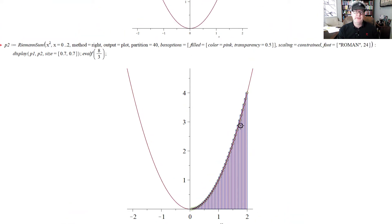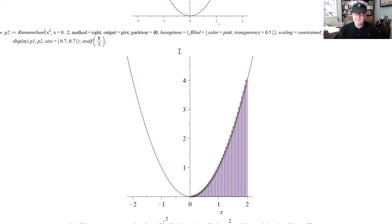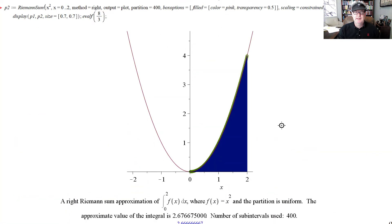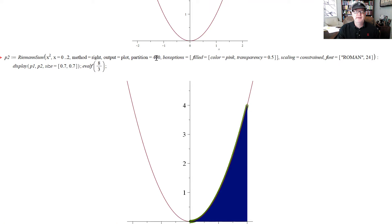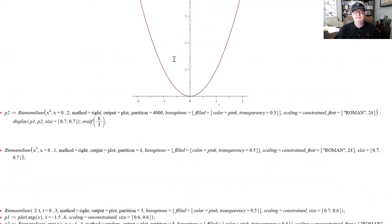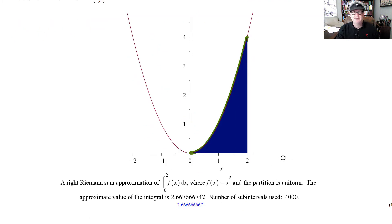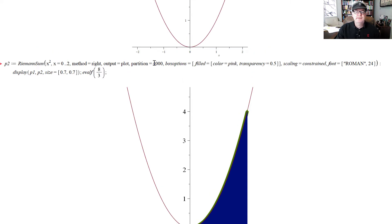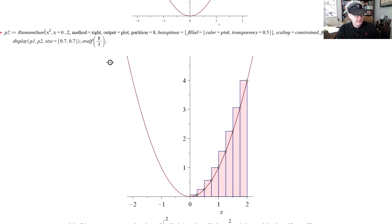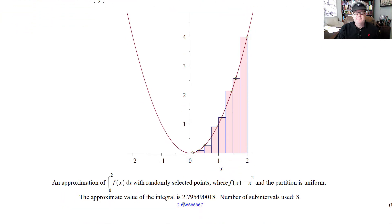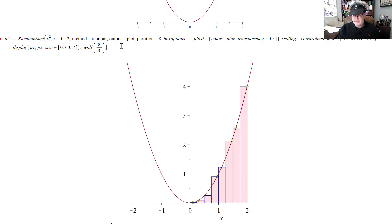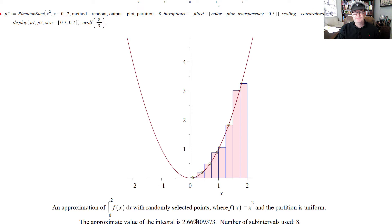This is sort of a worst-case scenario if you choose the right endpoint. If I keep increasing the number of rectangles — to 400, or even 4000 — we converge to that decimal value. With random points, you could be close or somewhat far away, and I get a different value each time. With 8 partitions there's a lot of fluctuation — sometimes pretty close, sometimes far off.